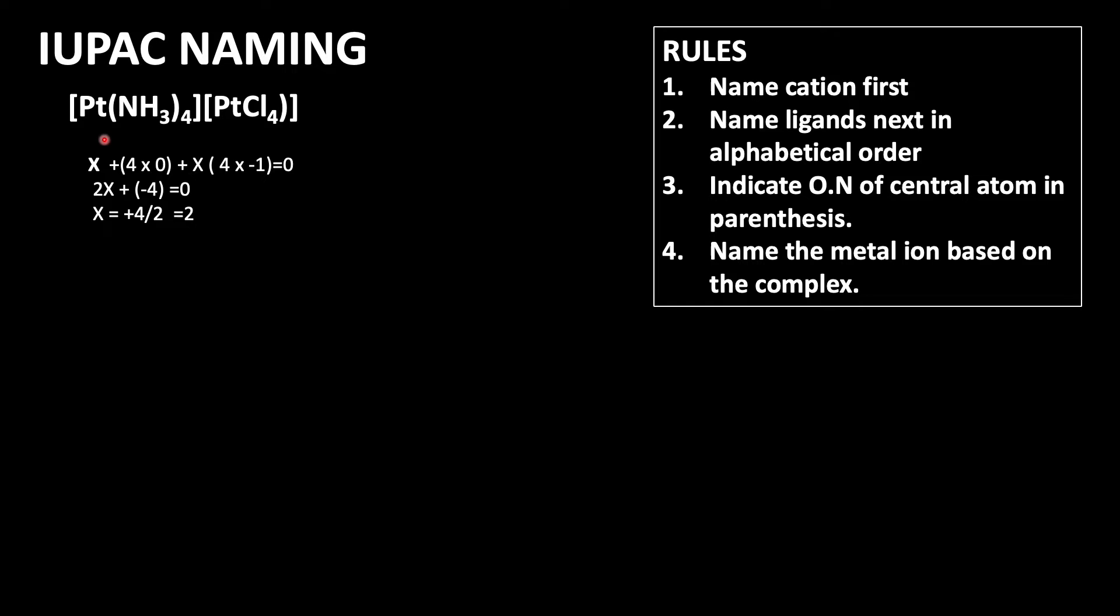Let us keep platinum's oxidation number as x. So x plus 4 times 0, because NH₃ is a neutral ligand and does not carry any charge. Then again platinum, let us keep it as x. Then Cl₄—there are 4 chloride groups present. So 4 times minus 1, as it carries minus 1 charge, equals zero for the neutral compound.